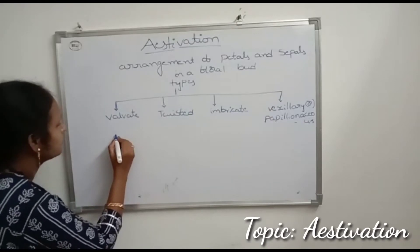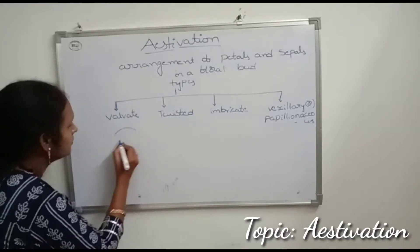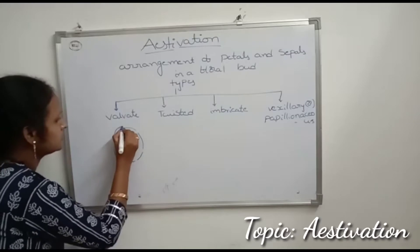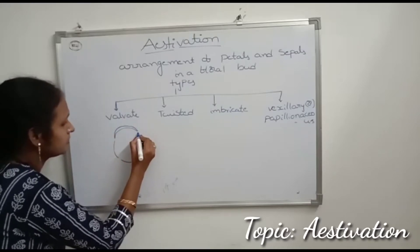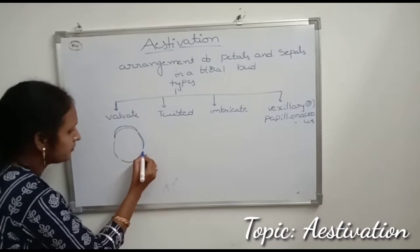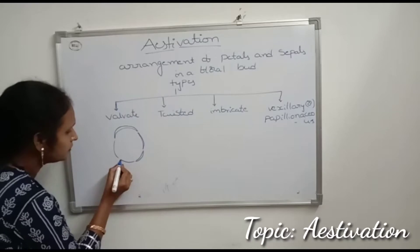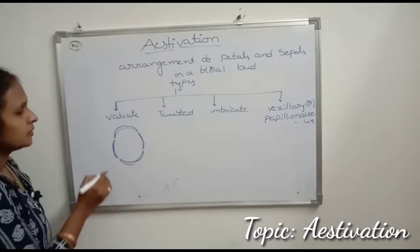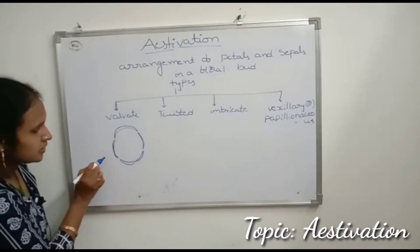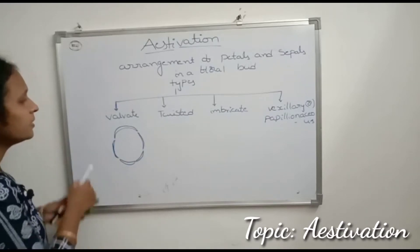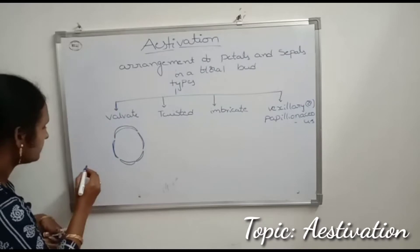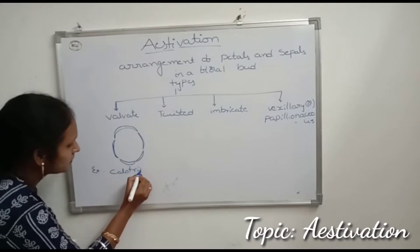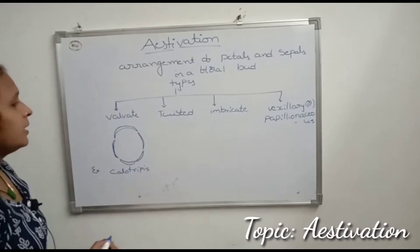Valvate estivation means the arrangement of petals and sepals where their margins just touch one another without overlapping. This type of estivation is called valvate estivation. An example is Calotropis.